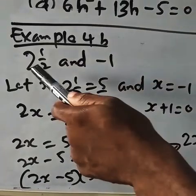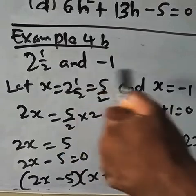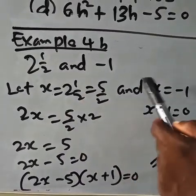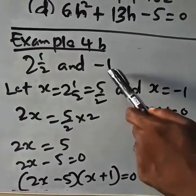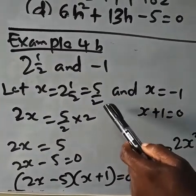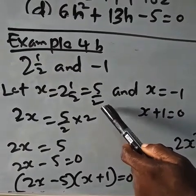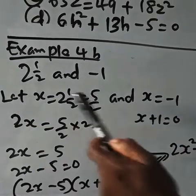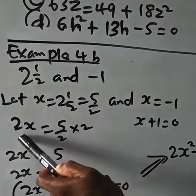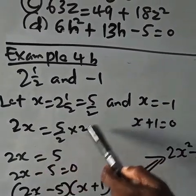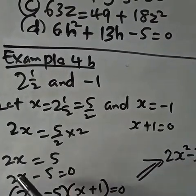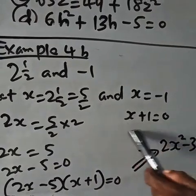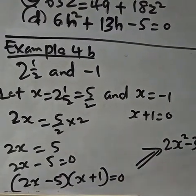Example 4b: given roots 2 and a half (which is 5 over 2) and minus 1, generate the quadratic equation. For x equals 5 over 2, multiply both sides by 2 to get 2x equals 5, so 2x minus 5 equals zero — that's one factor. For x equals minus 1, x plus 1 equals zero is the other factor. Multiplying the two factors gives the resulting quadratic equation.